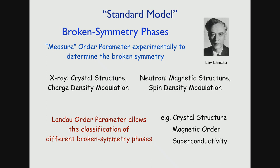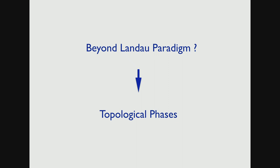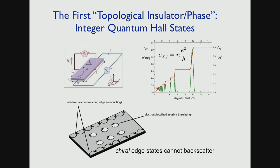That's essentially what you heard in the last four lectures. There's another standard model called Landau Fermi liquid theory for interacting electrons — also proposed by Landau, so Landau proposed at least two standard models we use in everyday life. Now, if you want to go beyond the Landau paradigm, one interesting concept is topological phases of matter. The beginning of topological phases is really the integer quantum Hall state, which you can think of as the grandfather of the topological insulator.